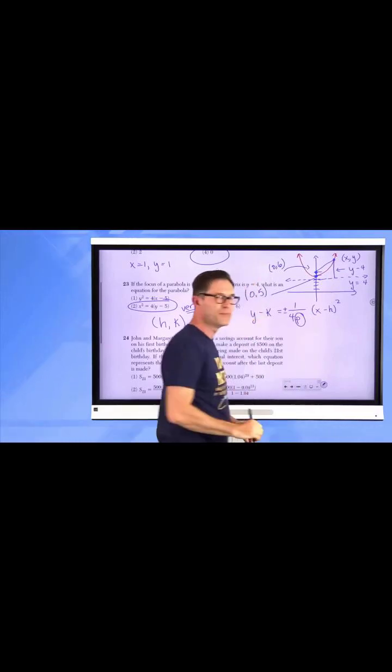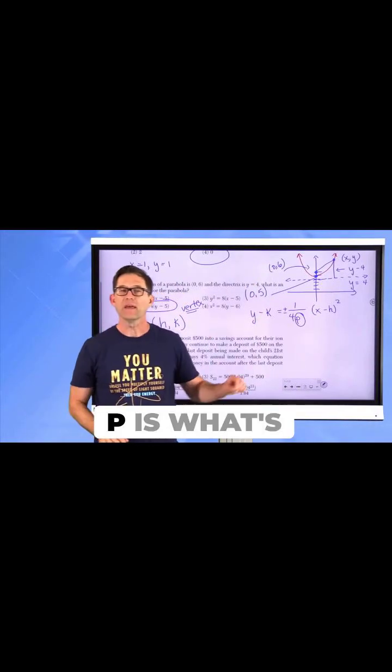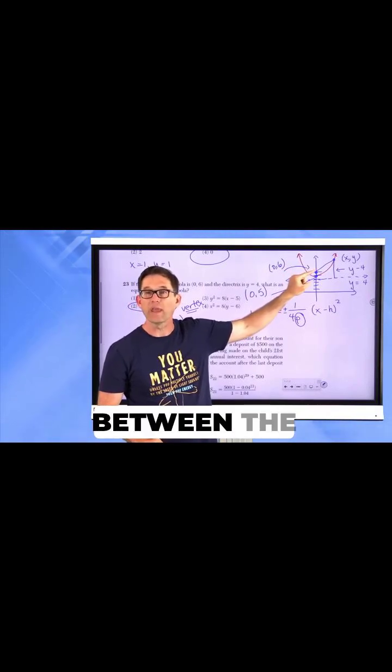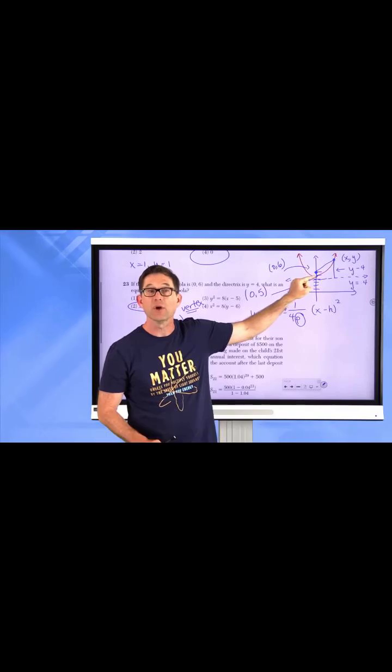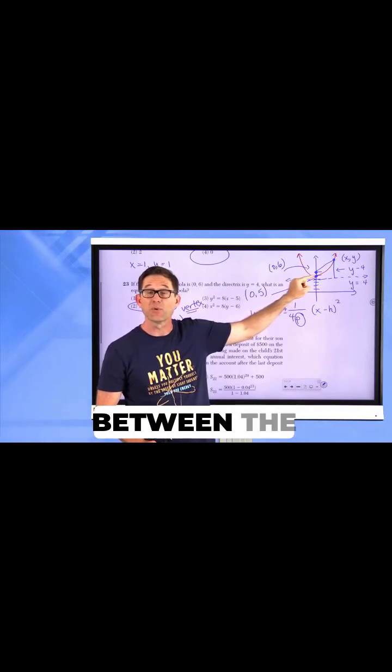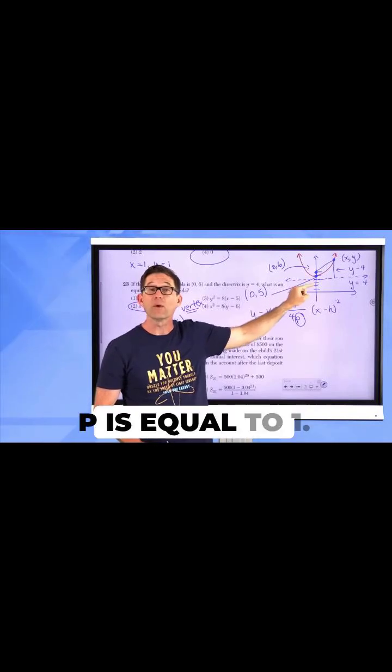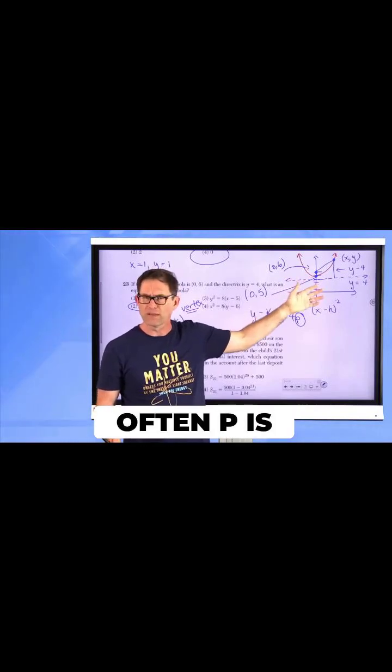What is this weird P? P is what's called the focal length distance. It's the distance between the focus and the vertex, which is the same as the distance between the vertex and the directrix. In here, P is equal to 1. Often, P is equal to 1.